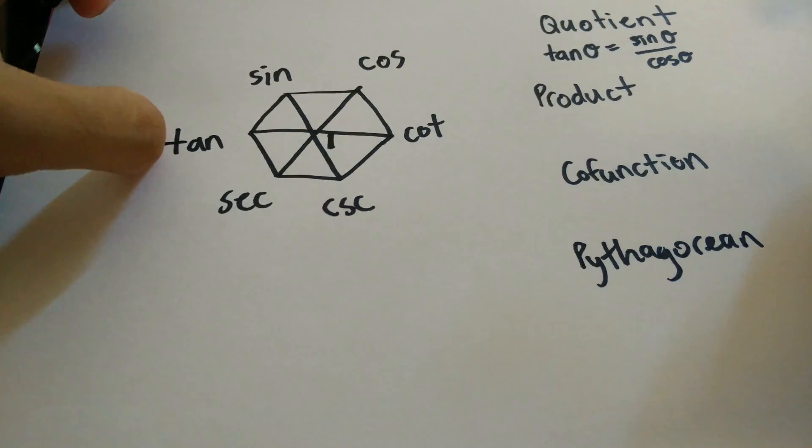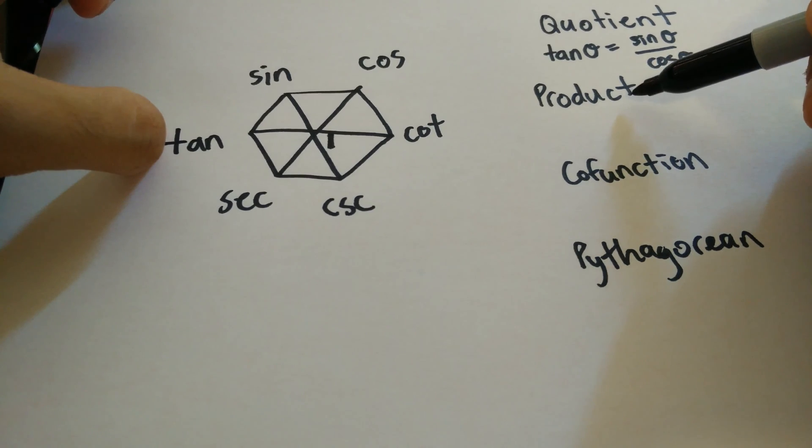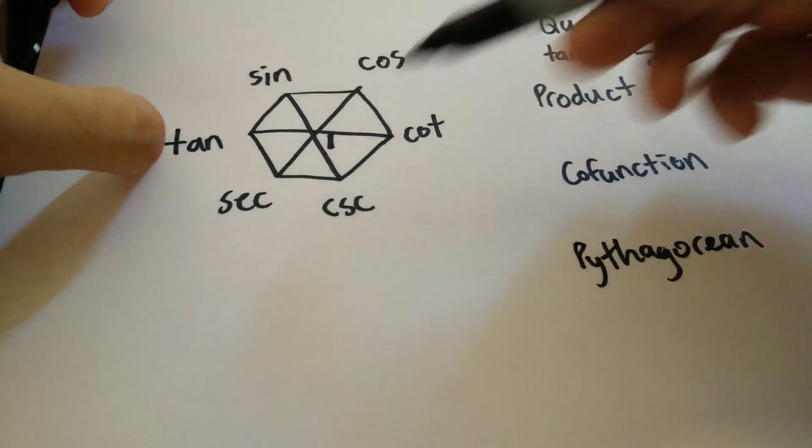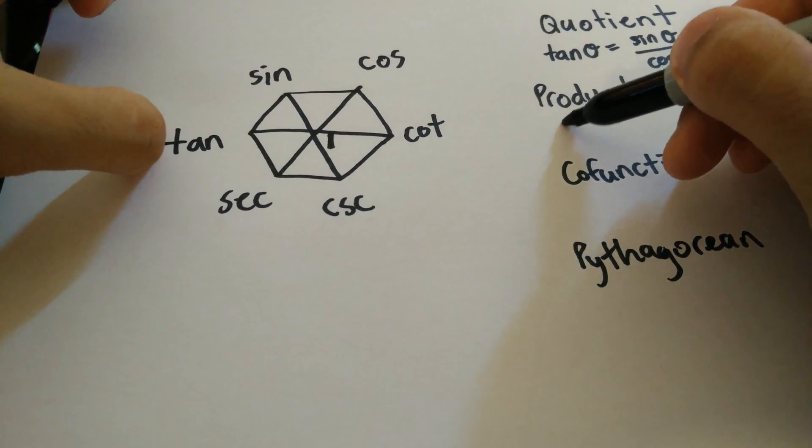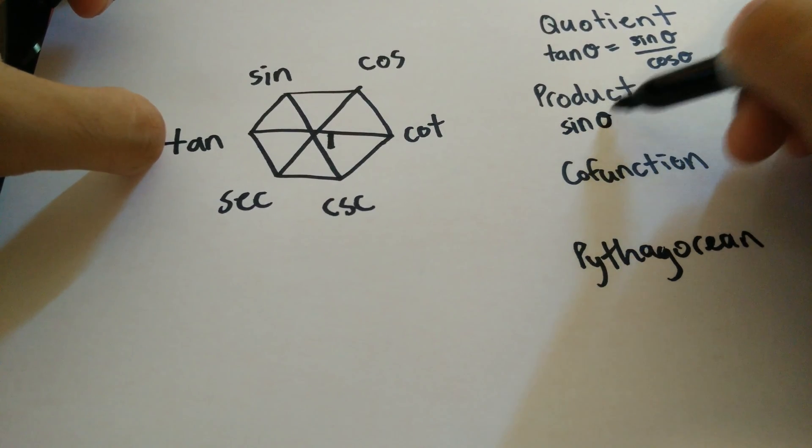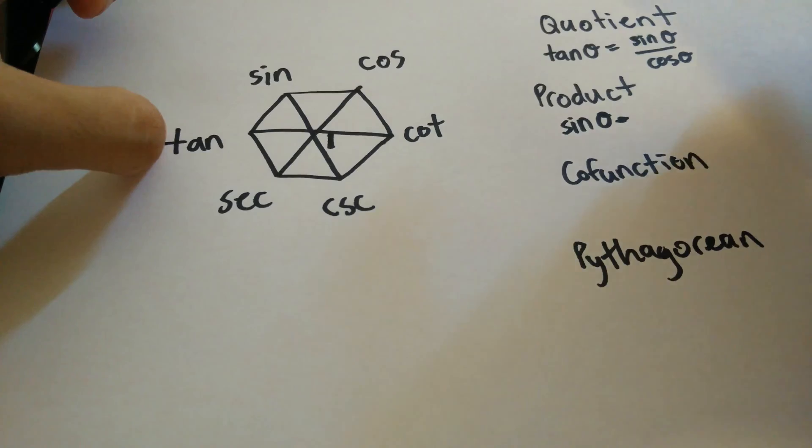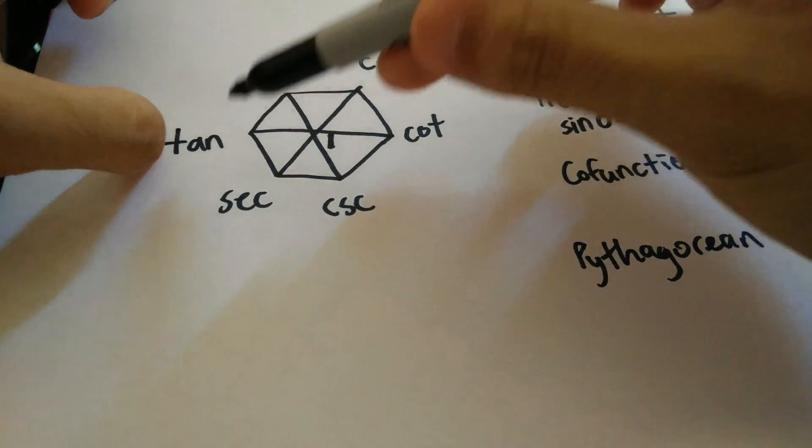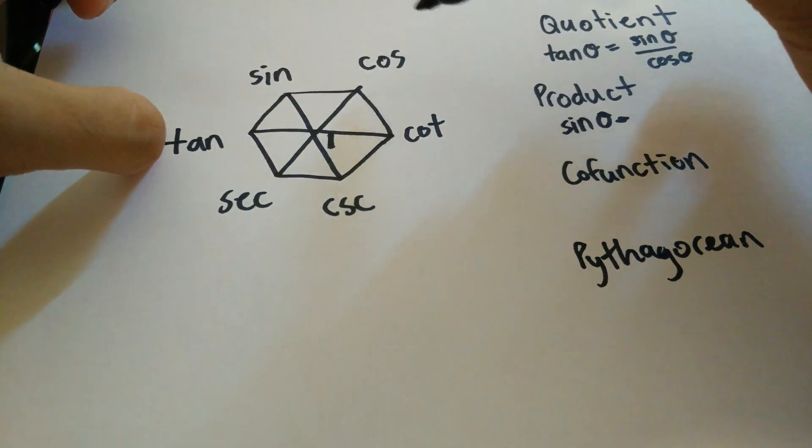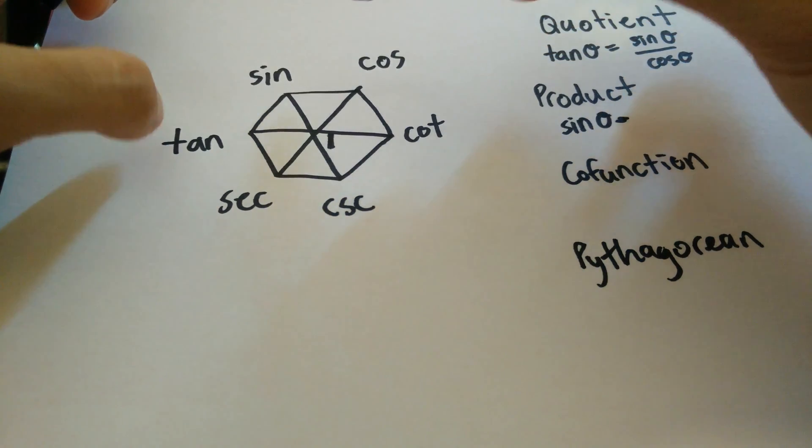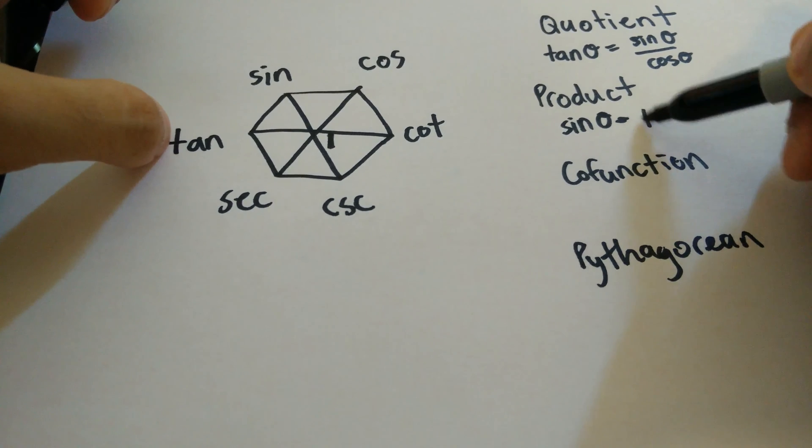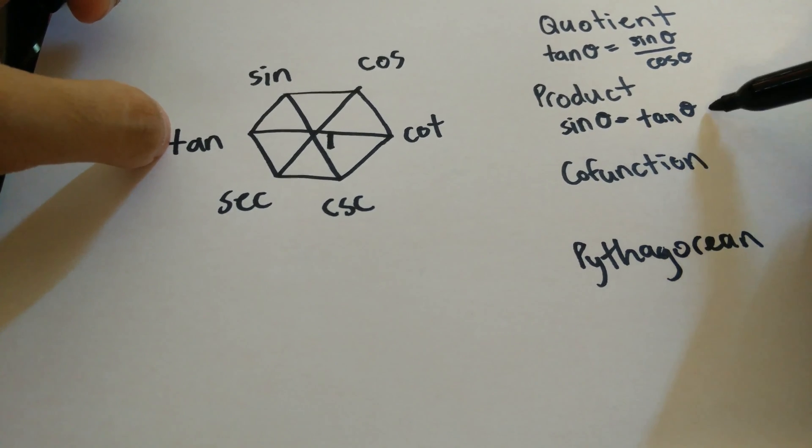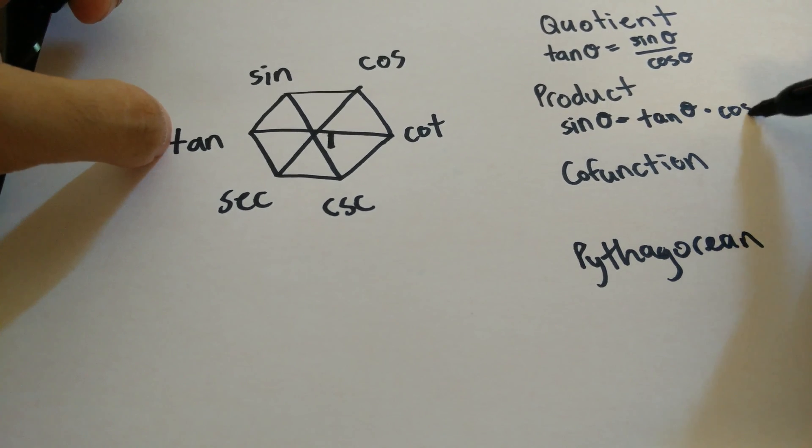But that's why the 1 is there. And the product identities can also be found using this hexagon. Let's take sine theta. Sine theta, once you take that function, you take the two functions immediately adjacent to it. Tangent theta and cosine theta. And sine theta would be the product of those two functions. So sine theta is equal to tangent theta times cosine theta.